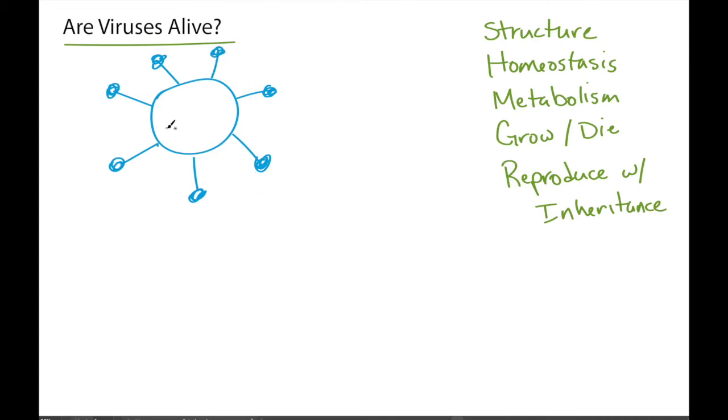It has an interior to the structure and inside of it is messenger RNA. And we'll talk about messenger RNA later. But it's basically a form of inheritance. So it has a structure and it has inheritance.